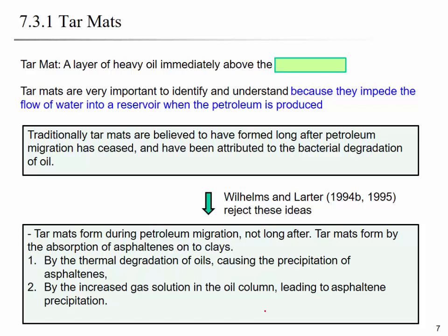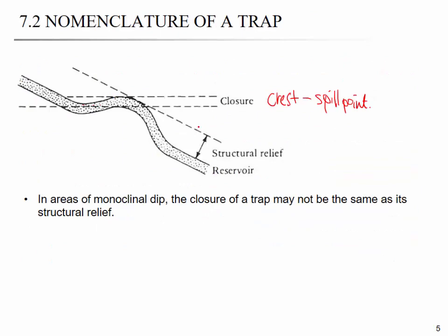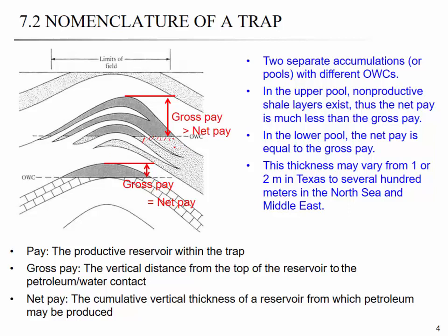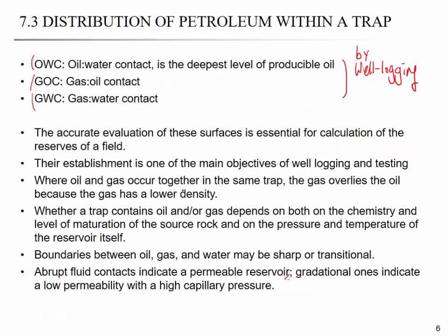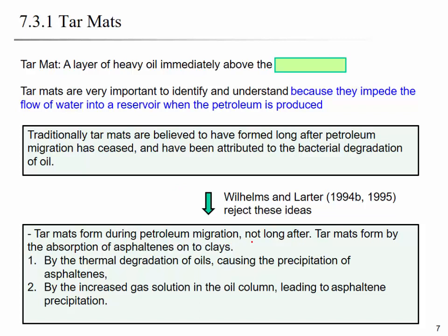Tar mat can be found very frequently in the trap. It is a layer of heavy oil immediately above the bottom water. Tar mat is very important to identify and understand because it impedes the flow of water into the reservoir when petroleum is produced. Tar mat is found at the water and oil contact, and it forms during and long after petroleum migration — formed by adsorption of asphaltenes onto clay, and by thermal degradation of oil causing precipitation of asphaltene. This asphaltene is very sticky, so it blocks the pores of the rock and decreases permeability.